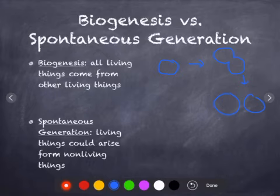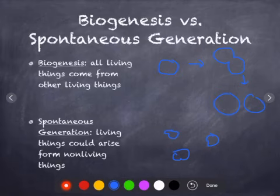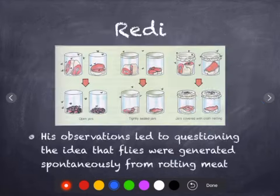Spontaneous generation is the idea that cells just pop out of nowhere and appear. We know today that this is not true, but in early times of scientists, spontaneous generation was accepted as truth, and scientists had to disprove this theory. We're going to talk about a couple of those scientists.